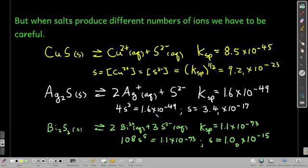But if salts produce different numbers of ions, we have to be careful. We have to actually calculate the solubility. So let's compare copper 2 sulfide, silver sulfide, and bismuth 3 sulfide.